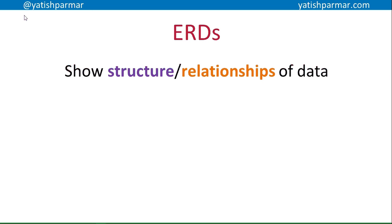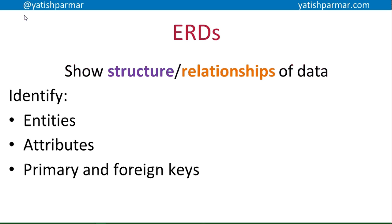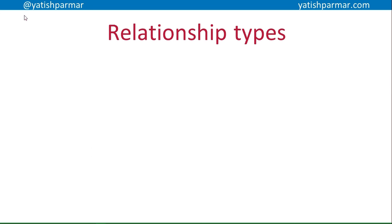An ERD is basically used to show the structure and the relationships of data within a system. It helps you to identify your entities — the different things that you are storing data about — the attributes that belong to those entities, how you're modeling them, and helps you identify where your primary or foreign keys are. There are different relationship types that we demonstrate on an ERD.